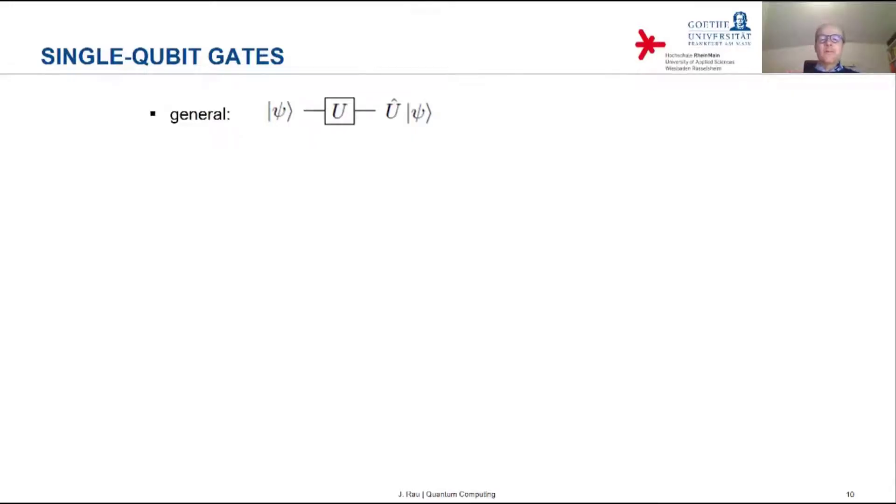Let's talk about the individual types of gates. Let's start with the simplest type of gate, and that's a gate for one qubit only.